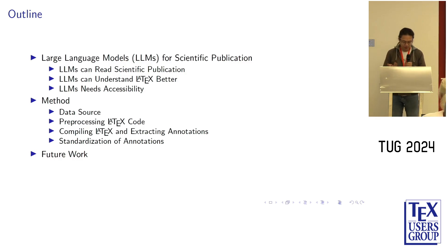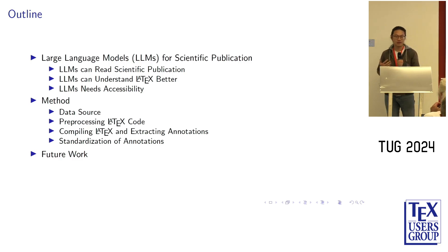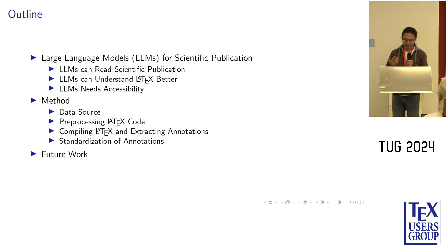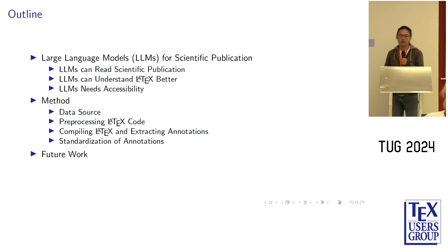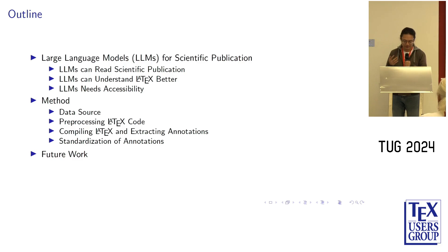In recent two years, large language models have provided an entirely new way for us to read papers on the internet. They can help us to read and summarise papers quickly, help us to extract information, do question answering, or even recommend new papers for us to read. This is because the large language model can process and understand the text very efficiently.